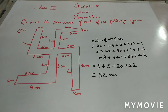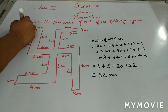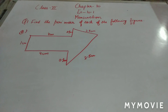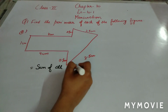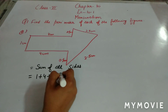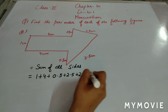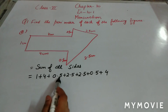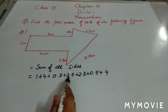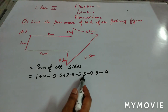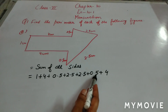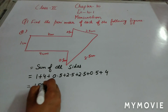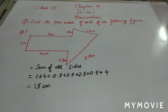Now for part f: sum of all sides = 1 plus 4 plus 0.5 plus 2.5 plus 2.5 plus 0.5 plus 4. Adding step by step: 4 plus 1 is 5, plus 0.5 is 5.5, plus 2.5 is 8, plus 2.5 is 10.5, plus 0.5 is 11, plus 4 is 15 centimetres. So we have completed question number 1. Question number 2 we will do in the next video.